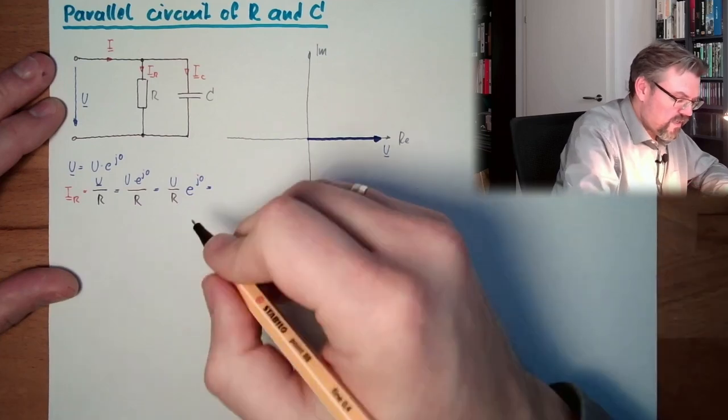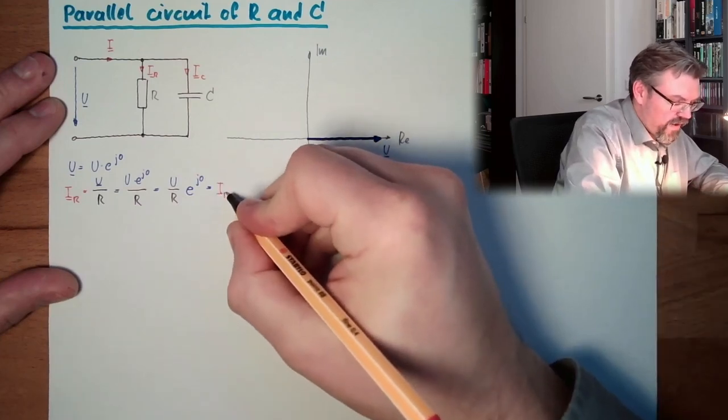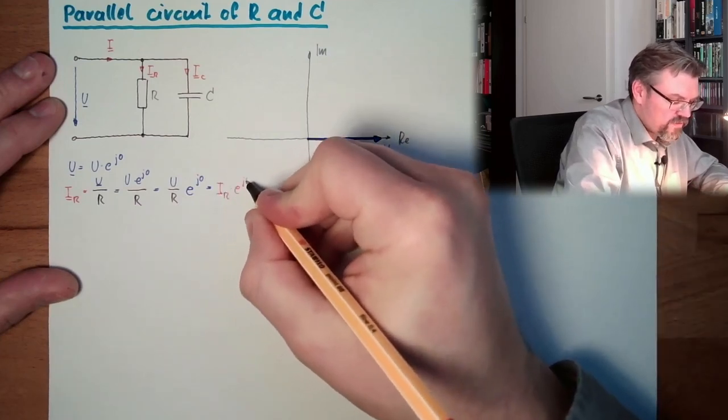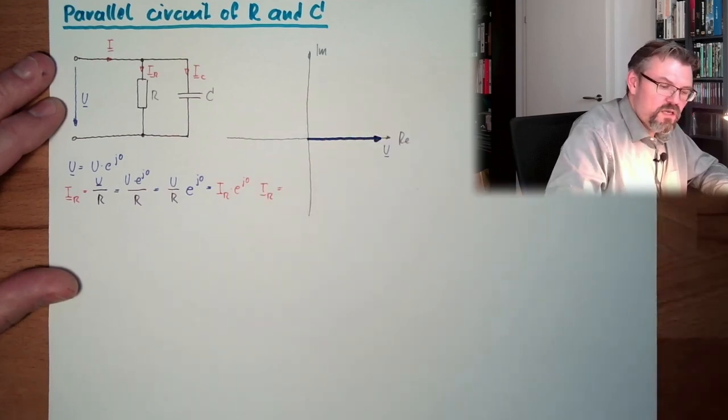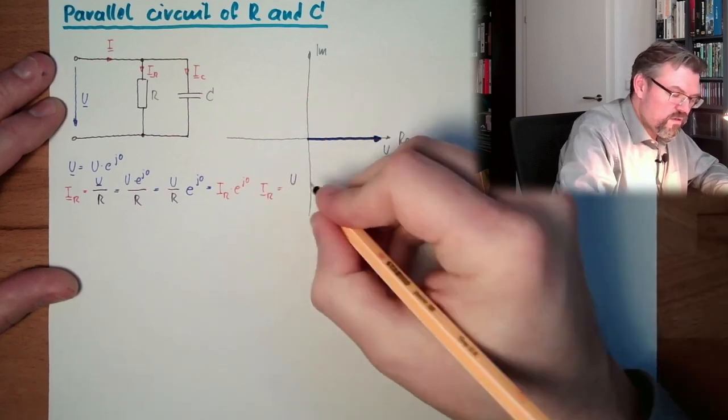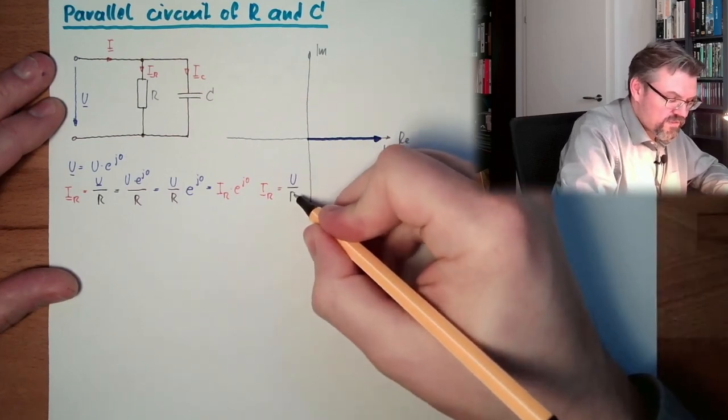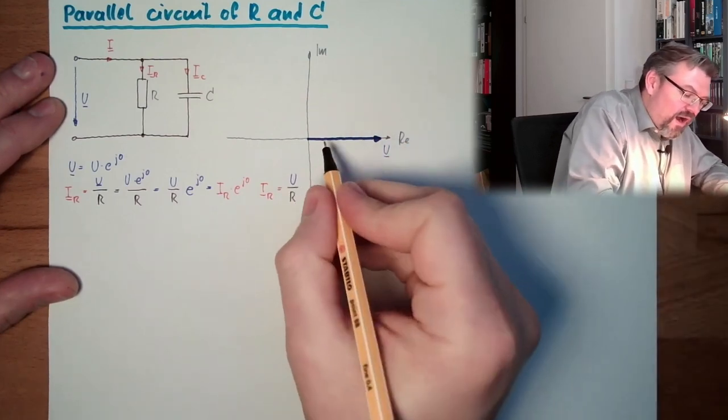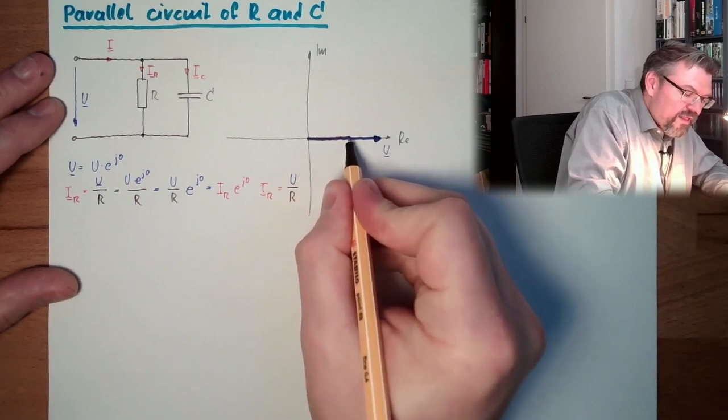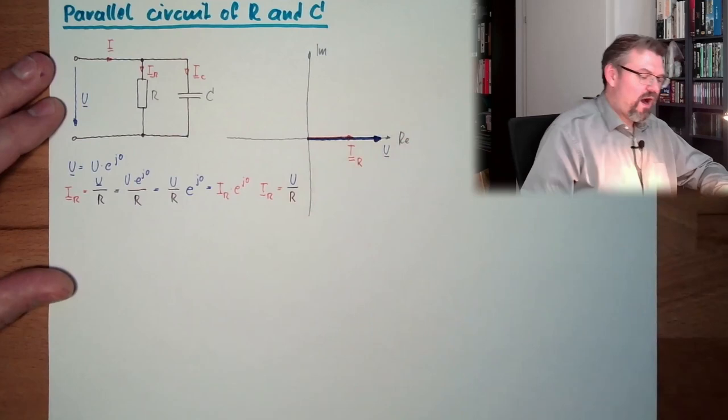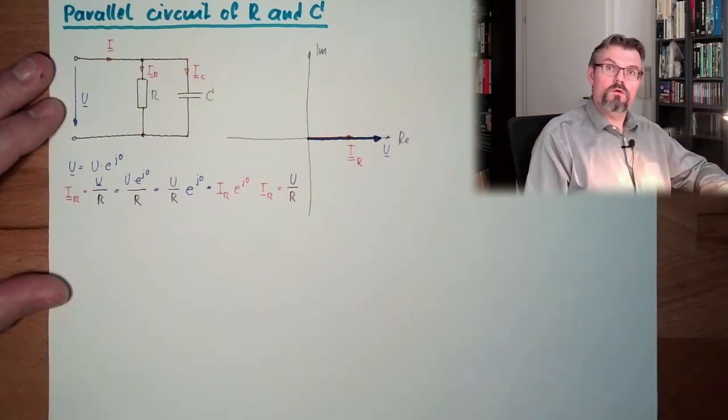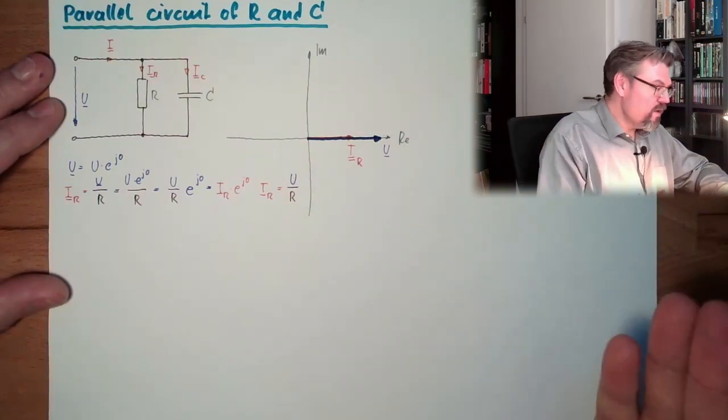And this actually is our absolute value of IR. And the angle of IR is zero, with our absolute value of IR which equals U, the absolute value of U, divided by the resistance R. So my IR will have the same angle as my voltage. Here is my IR. Good, that's one thing.